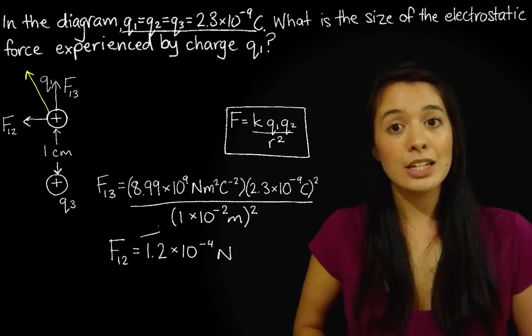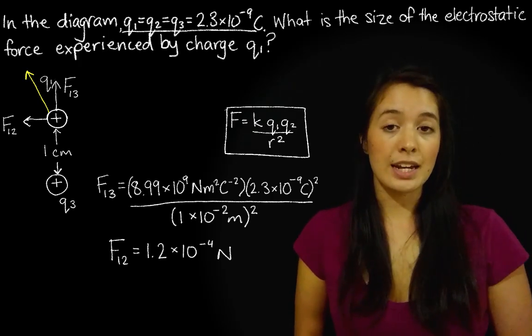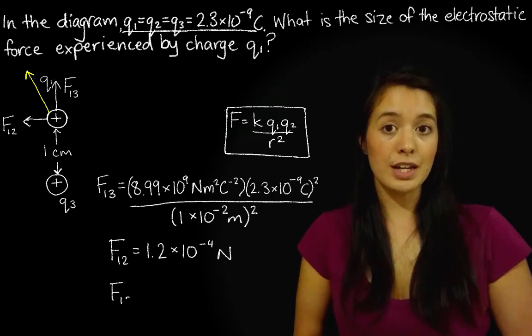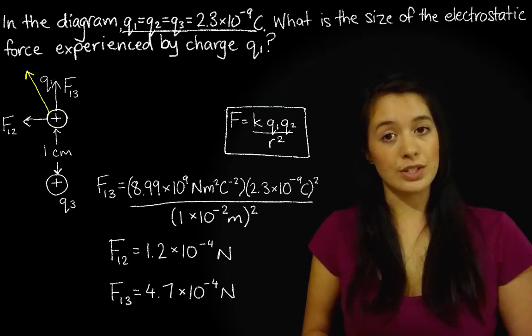And on your calculator, you can simply just change the 2 to a 1. And if you plug all this in, you should get an answer of F13 is equal to 4.7 times 10 to the negative 4 newtons.